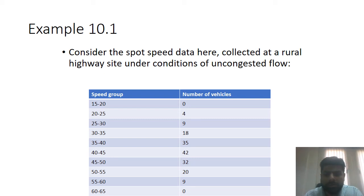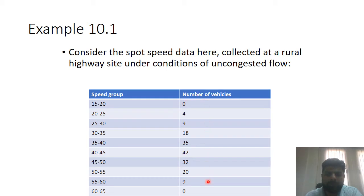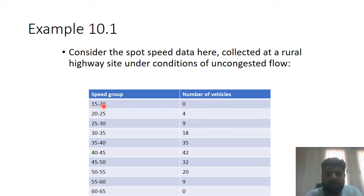Assalamualaikum students. I promised I would explain the solution of the spot speed example in a video, so here I am. In example 10.1 from the textbook, they have given us spot speed data divided into speed groups, shown in the first column of the table. The number of vehicles in each group is given in the second column, with lower and upper limits mentioned.